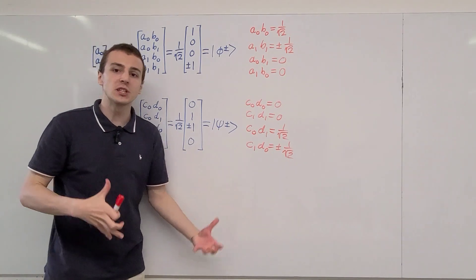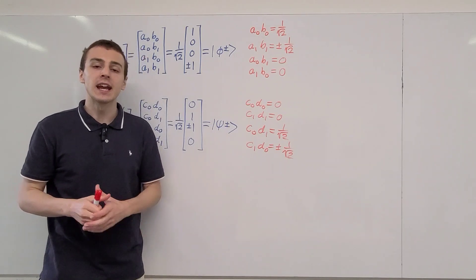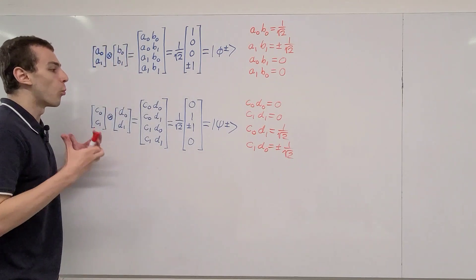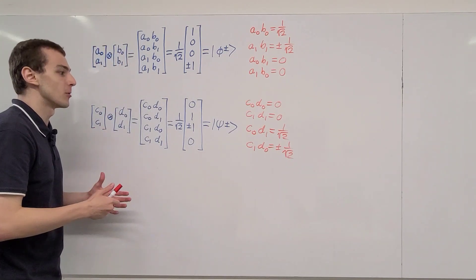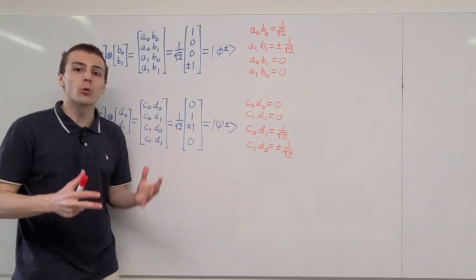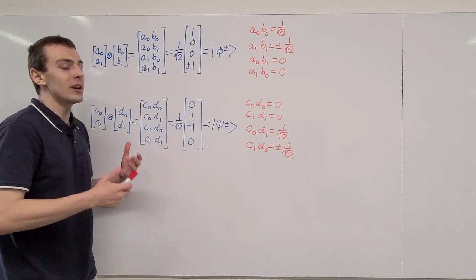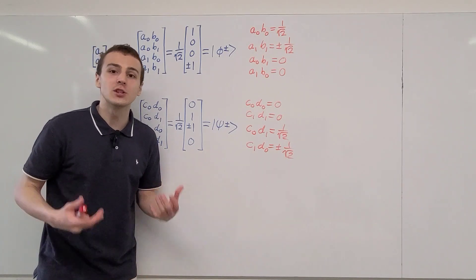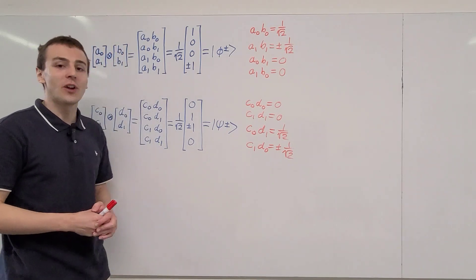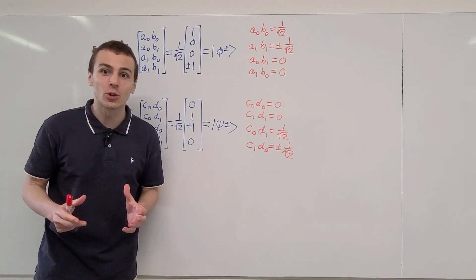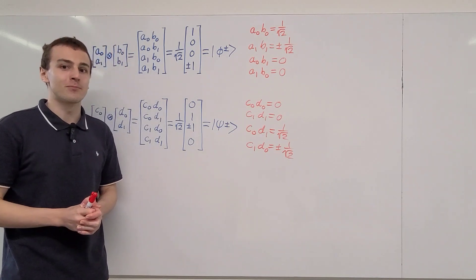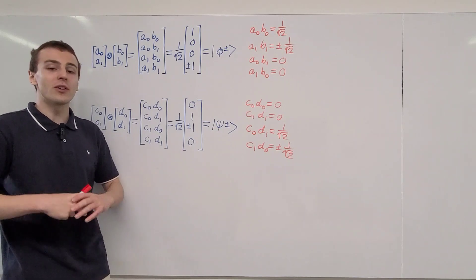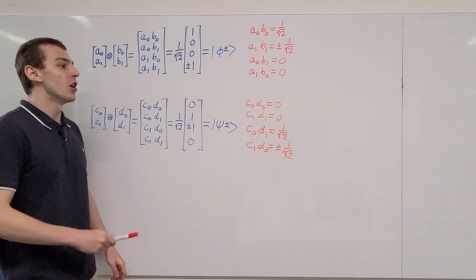This video has served as an introduction to why the Bell states are so special. These four Bell states form an orthonormal basis for the two-qubit system, and all of them are entangled. Having an orthonormal basis consisting entirely of entangled states is a remarkable and incredibly useful property in quantum information. There is a lot more nuance associated with entanglement, and we'll go into that in later videos in the quantum mechanics playlist.